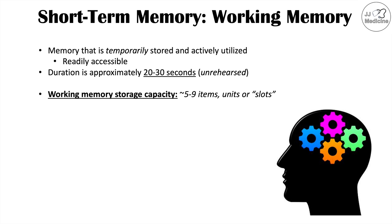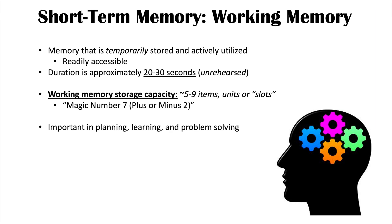Even with chunking, if you were to have 9 groups of items, that is oftentimes going to be the maximum capacity — there's only a finite number of slots in working memory. The way to remember working memory storage capacity from 5 to 9 items is the mnemonic the magic number 7 plus or minus 2: 7 minus 2 equals 5, and 7 plus 2 equals 9. Working memory is important in many functions in life — planning, learning, and problem solving.